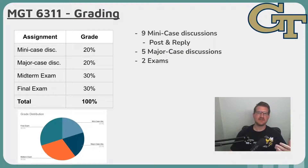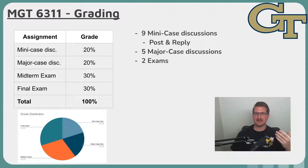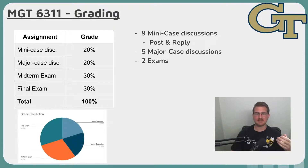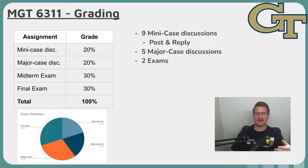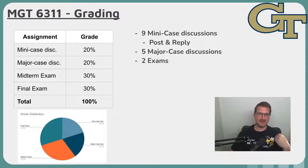The grade distribution for this class is pretty simple, broken into four major categories. The first category is mini case discussions, which you'll have almost every week. You'll read a one to two page section in the textbook covering a specific case study, then do a post answering three to four questions as well as a response to somebody else's post. This really doesn't take a lot of time — maybe 30 to 50 minutes — and it's worth 20% of your grade.